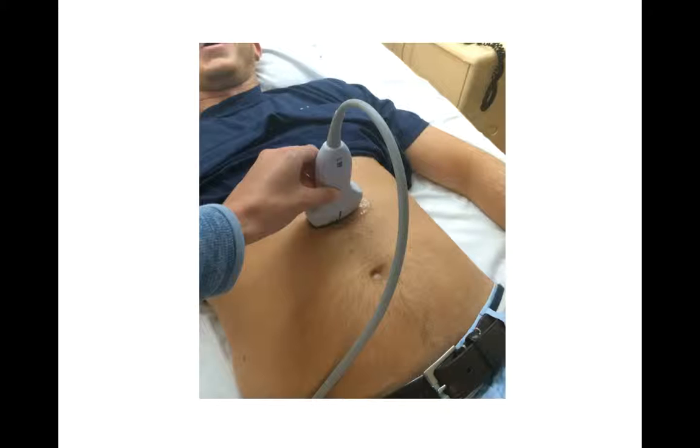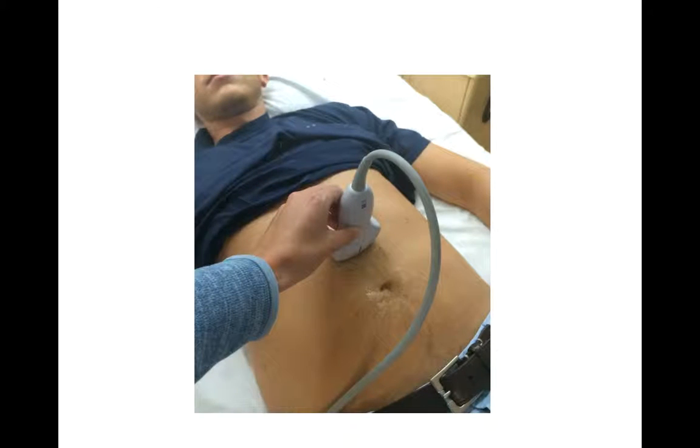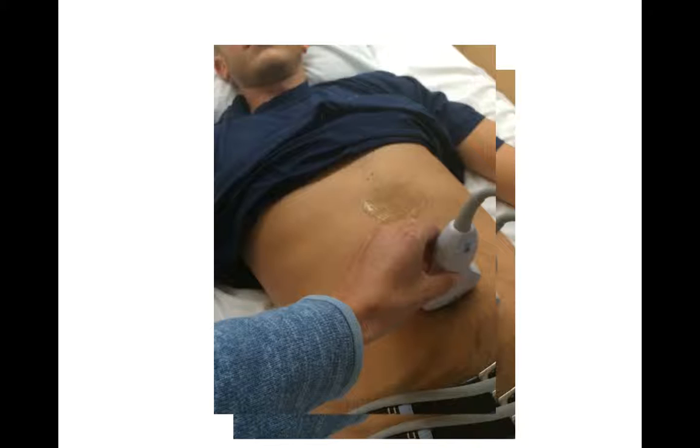This is the position for the proximal aorta. Mid-aorta. Distal aorta is usually seen at or just below the umbilicus.